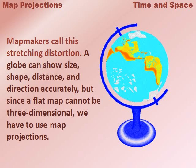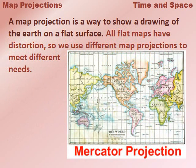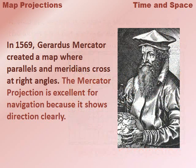A globe can show size, shape, distance, and direction accurately. But since a flat map cannot be three-dimensional, we have to use map projections. A map projection is a way to show a drawing of the Earth on a flat surface. All flat maps have distortion, so we use different map projections to meet different needs.